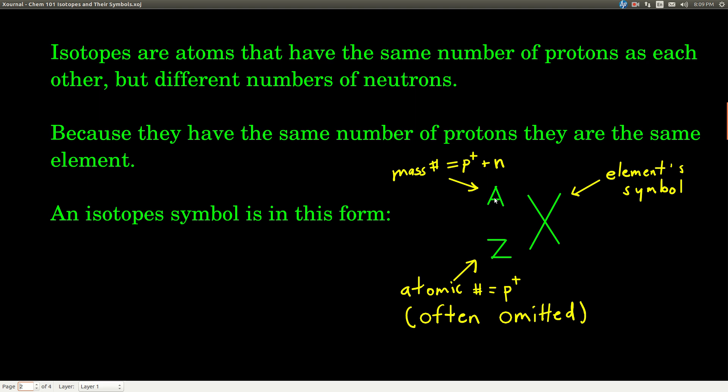If we need to know how many neutrons there are, all we have to do is take the mass number minus the atomic number and the difference will be the number of neutrons.